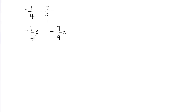What I'm going to do is multiply my fraction by the other fraction's denominator. I'm going to look at my first fraction — negative 1 over 4 — and look at the other fraction's denominator, which is 9. That means I will multiply my first fraction by 9 over 9. Then for the second fraction, I look at the first fraction's denominator, which is 4, and multiply by 4 over 4.